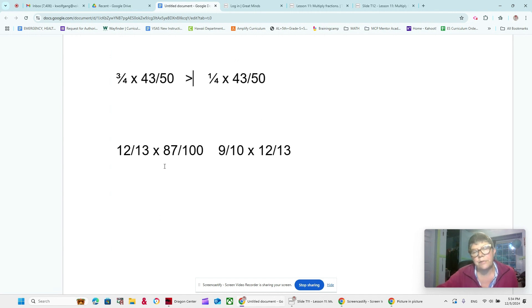How about twelve-thirteenths times eighty-seven hundredths versus nine-tenths of twelve-thirteenths? Now, first of all, we just switched the order, so don't let that confuse you. See, these are both twelve-thirteenths. Now, here's the tricky thing. Eighty-seven hundredths or nine-tenths. Nine-tenths sounds smaller, but could you change it to an equivalent fraction by multiplying it by ten over ten?